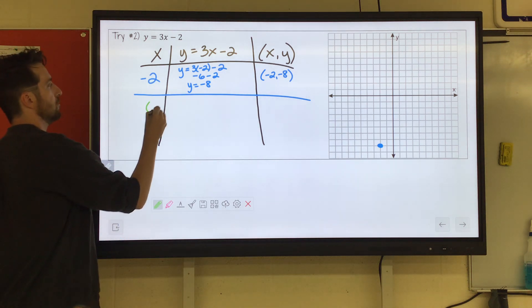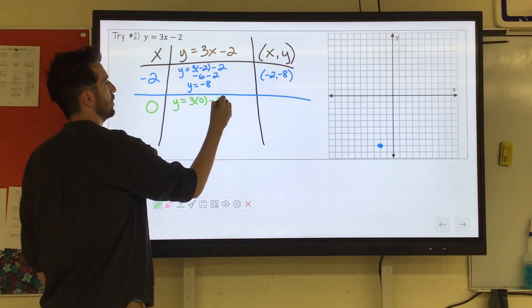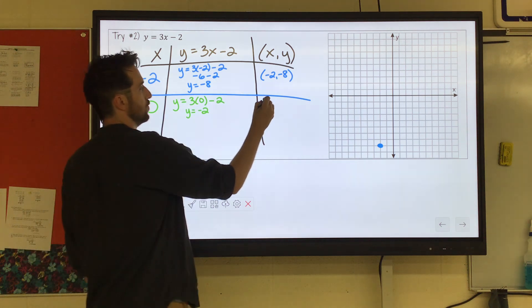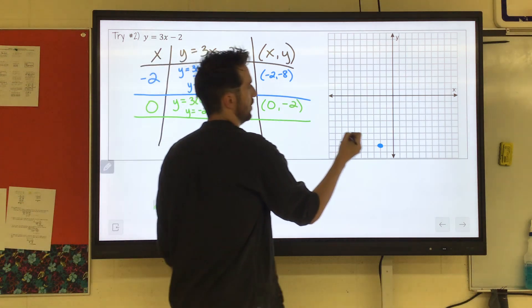Next one, I'm going to pick 0 because it's easy to work with. That would be 0 minus 2, which is just negative 2. So 0, negative 2. That would be our next point.